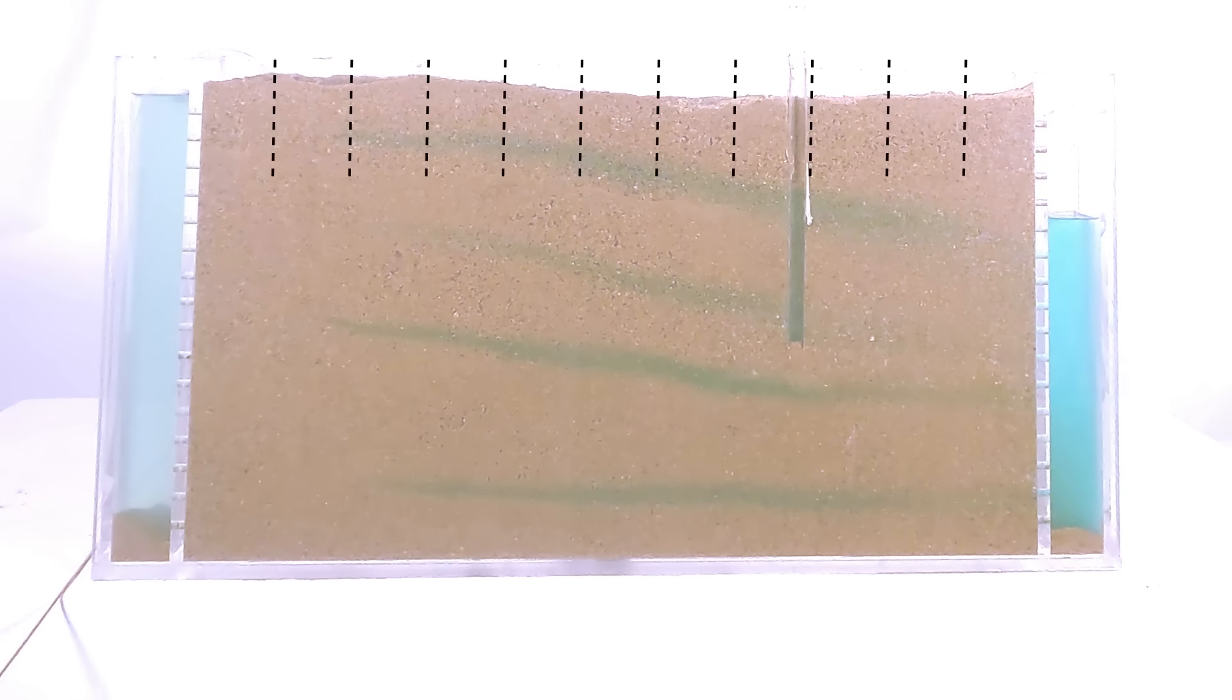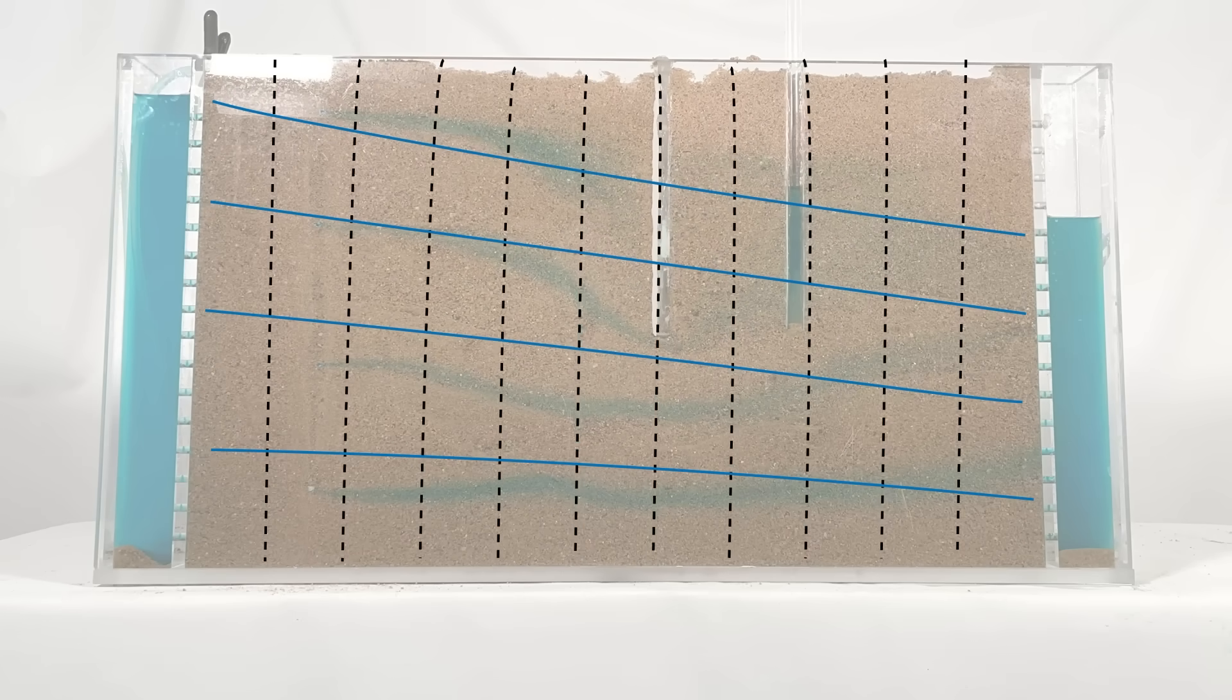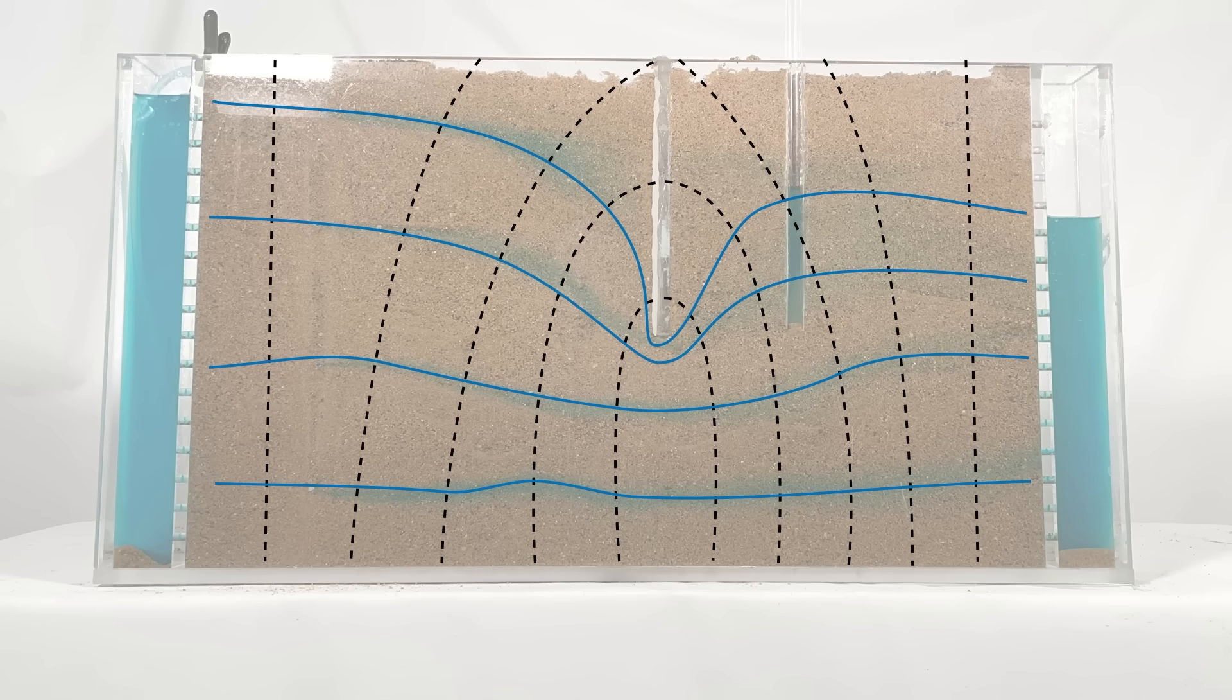I can sketch a flow net over the model to make this clearer. The black lines are equipotentials. They connect areas of equal pressure. The blue lines show the directions of flow. Without a cutoff, the flow paths are shorter and thus the equipotential lines are closer together. With a cutoff wall, the equipotential lines are spread out. That means both the volume of seepage and the uplift pressure at the base of the structure have been reduced.